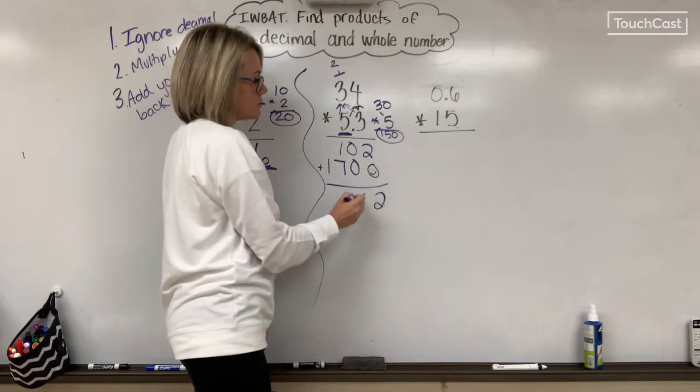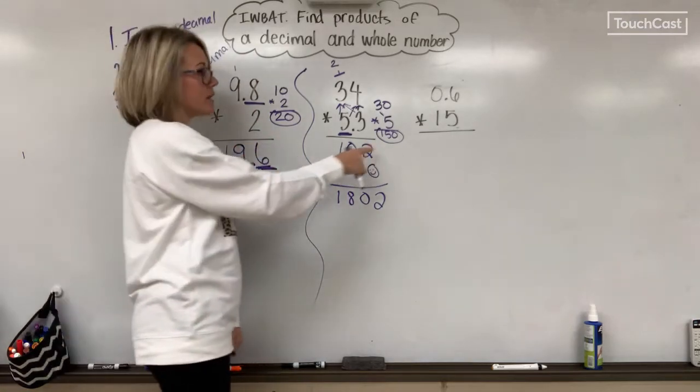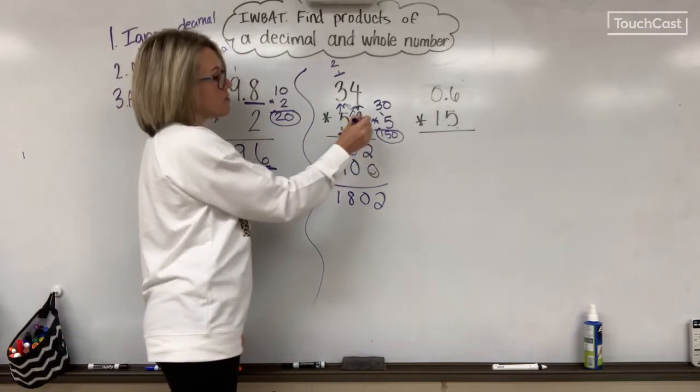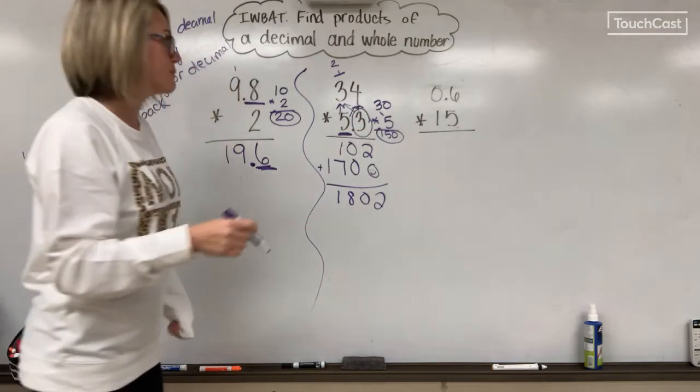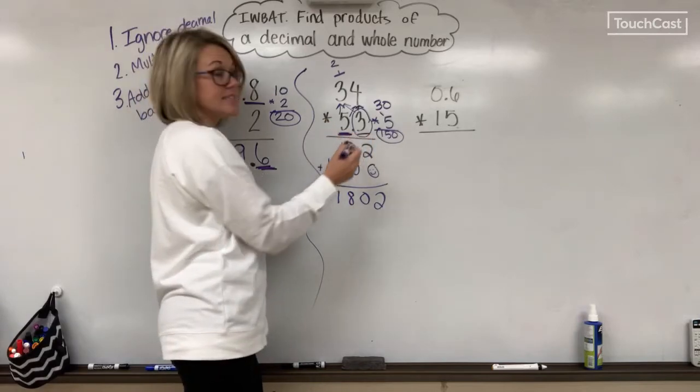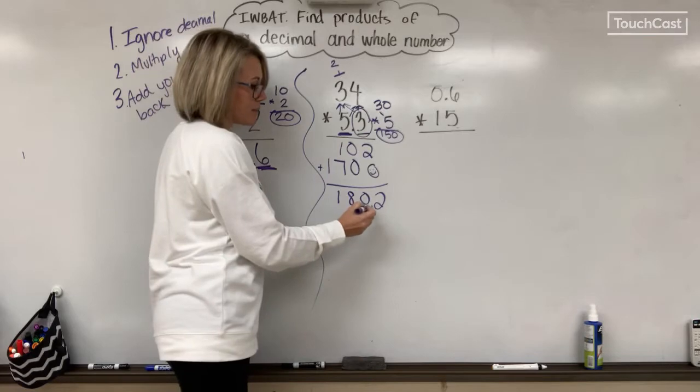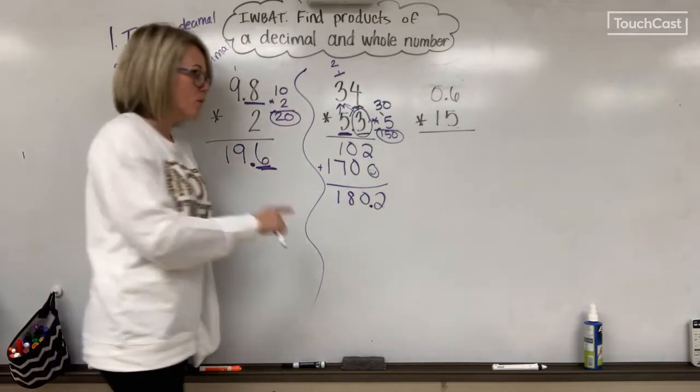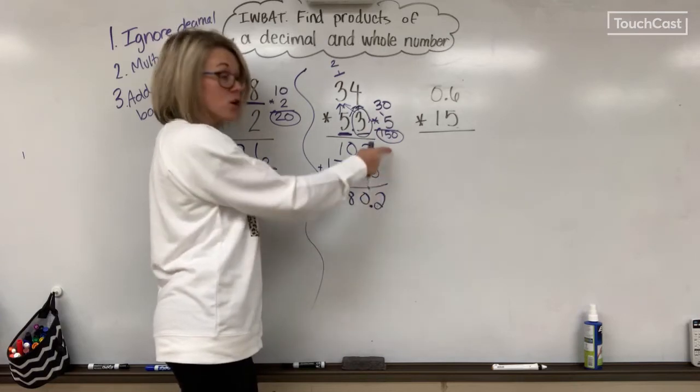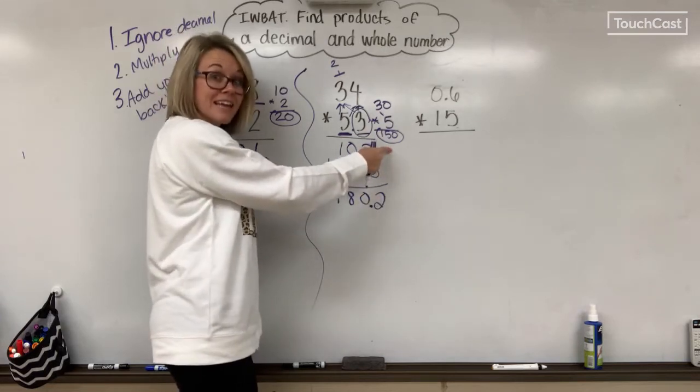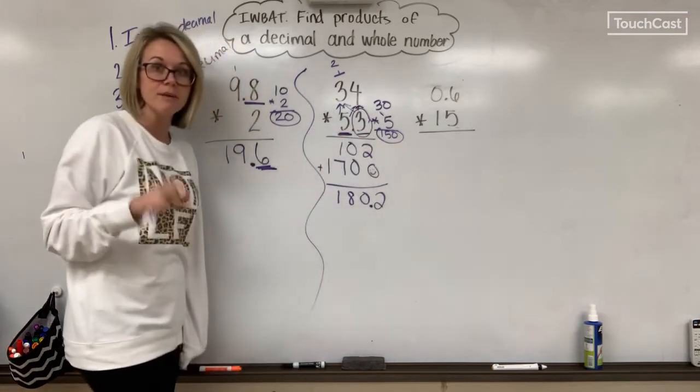Now I'm going to add these up: 2, 0, 8, 1. I know my answer needs to be around 150, and I also know that it needs to end in the tenths place because my factor was in the tenths place. So if I place it where there's only one number behind the decimal, 180.2. Is 180 close to 150? It is. So I checked it with my place value and I checked it with my estimation, so I should be good.